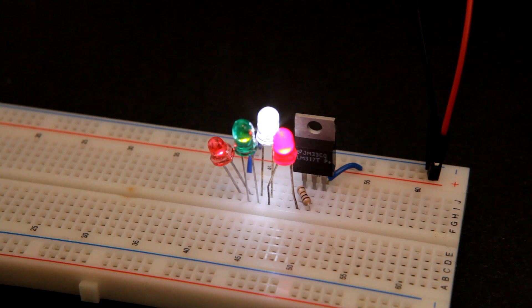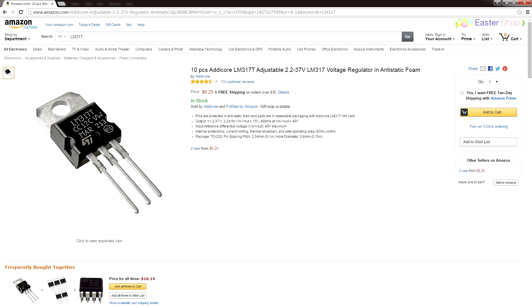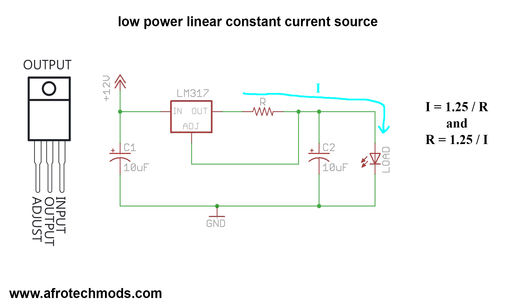So how do we build this? Well, the easiest way to build a constant current source is using an LM317. I'll put a link in the video description section. Here's the circuit diagram. It's very simple.